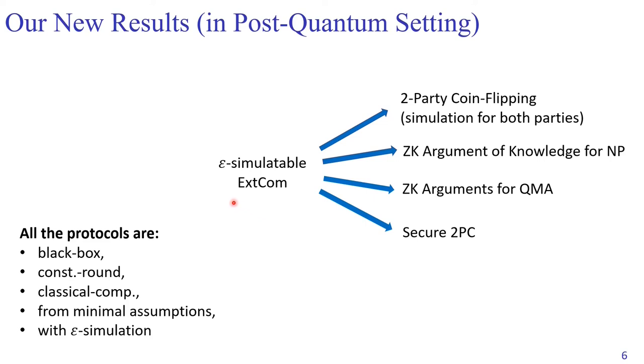As applications, our extractable commitments imply two-party coin flipping, zero-knowledge argument of knowledge for NP, and zero-knowledge arguments for QMA. And eventually, we also obtain secure two-party computation. All these protocols also enjoy the advantages shown here. But since our extractable commitment is only epsilon-simulatable, we only manage to achieve epsilon-simulatable versions of these protocols.